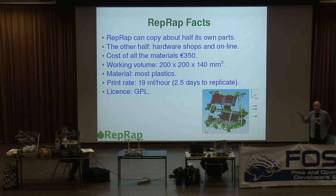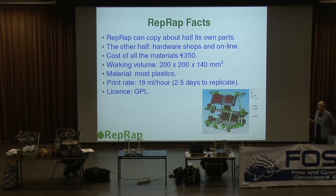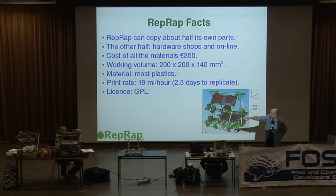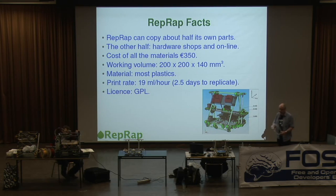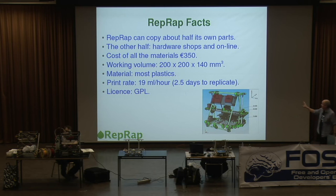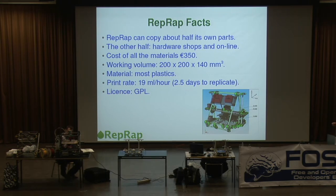It'll build objects in most thermoplastics — plastics that melt and then re-solidify. The two we use most of all are ABS, which Eric has on that yellow reel over there, and the very best plastic we've found to run in the machine is the one this machine is made from: polylactic acid. It prints at a rate of about 19 milliliters per hour, which means that to copy all the parts of the machine it can print for itself, the machine takes about two and a half days — though that's getting faster all the time.